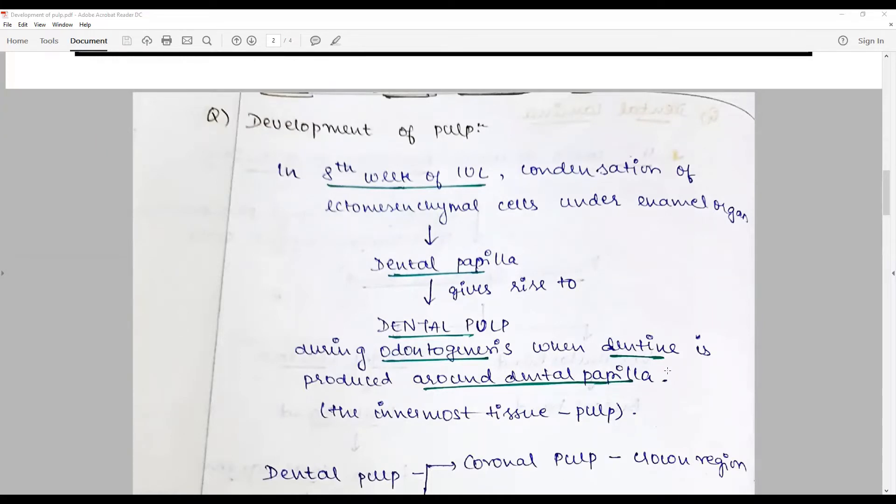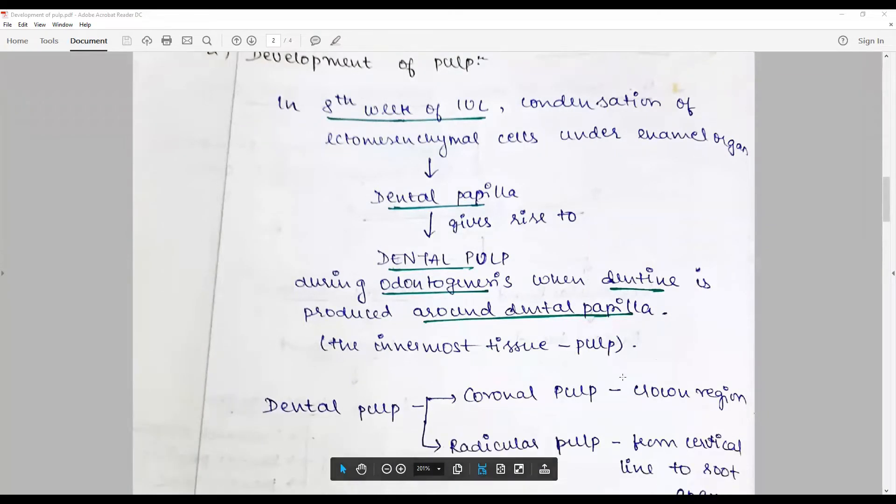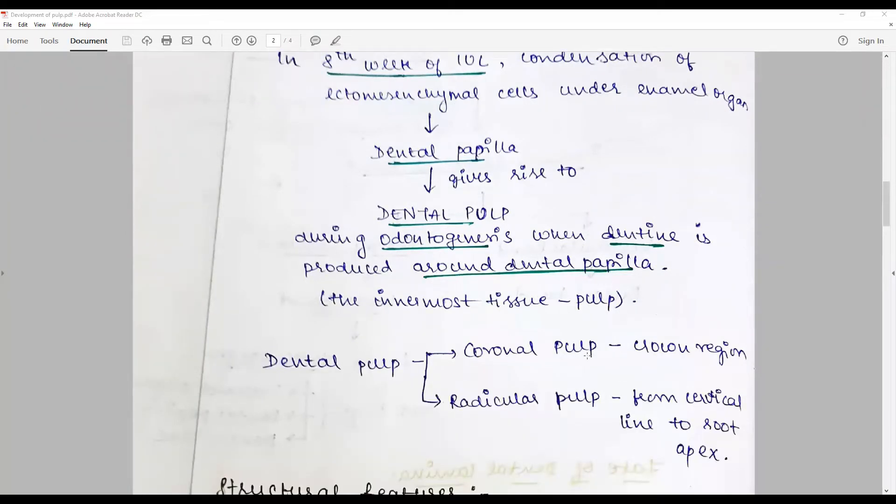The dental papilla is surrounded by the newly formed dentin by the odontoblasts and the organizing influence of the ameloblasts or inner enamel epithelium by reciprocal induction. As the odontoblasts form and dentin progresses, the dental papilla continues to remain and essentially forms into the pulp.